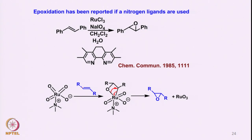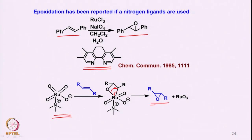It is also observed that if one uses a nitrogen ligand, an olefin can be converted to the corresponding epoxide. The lone pair of electrons on the nitrogen-oxygen reacts with ruthenium tetroxide to form a species that, upon contact with the olefin, undergoes a 2+2 cycloaddition of the ruthenium-oxygen double bond and the olefin double bond, forming an intermediate that cleaves to give the epoxide and a low-valent ruthenium species. This is one of the very rare examples of conversion of an olefin to the corresponding epoxide using ruthenium chemistry.